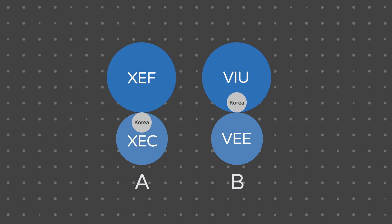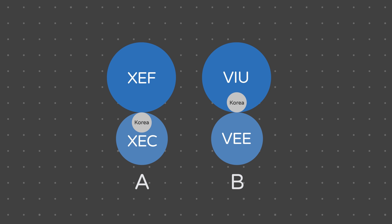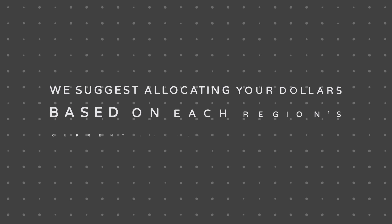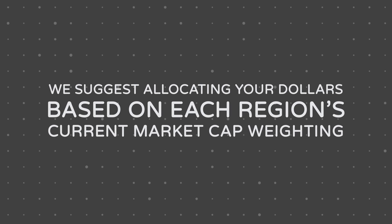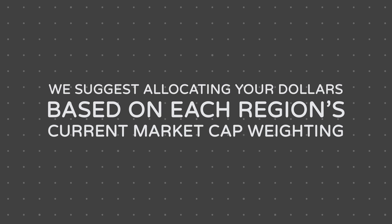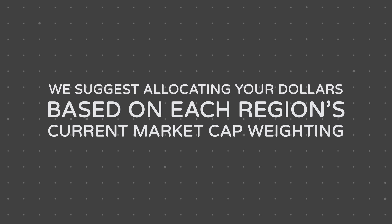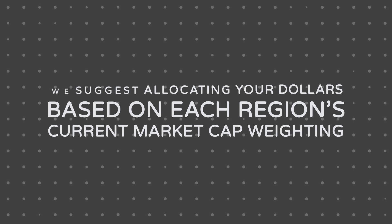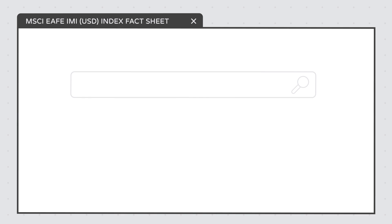This seems straightforward enough, but what portion of your investment dollars do you allocate to each ETF? If you don't have a preference, we suggest allocating your dollars based on each region's current market cap weighting. This is how many global equity ETFs do it, including Vanguard's asset allocation ETFs, which is a subject for another discussion some other day. To learn how to employ market cap weighting like a pro, let's start with the iShares ETFs.